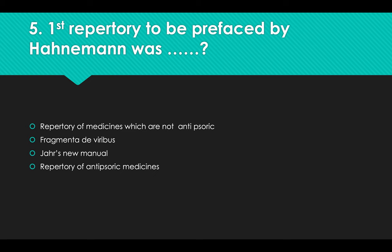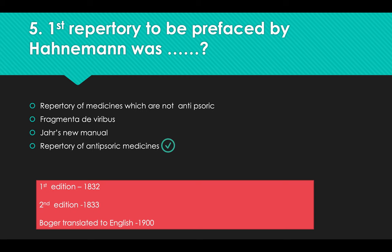The first repertory to be prefaced by Hahnemann was: Options: A) A Repertory of Medicines Which Are Not Antipsoric, B) Fragmenta de Viribus, C) Jahr's New Manual, D) A Repertory of Antipsoric Medicines. Answer: Option D, Repertory of Antipsoric Medicines. First edition published 1832, second edition 1833. Boger translated it to English in 1900.